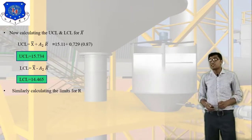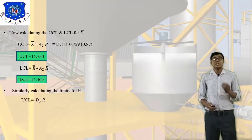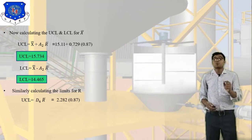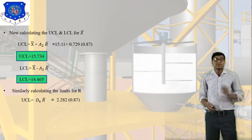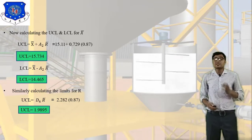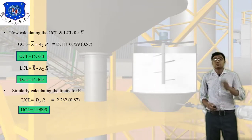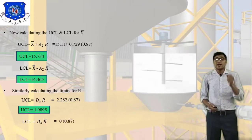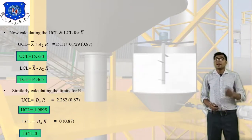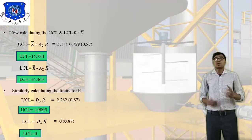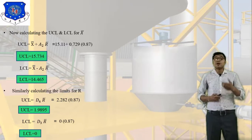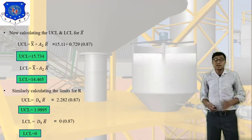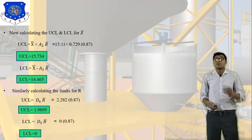Step 5: calculating UCL and LCL for the R chart. UCL = D4 × R-bar = 2.283 × 0.87 = 1.989. LCL = D3 × R-bar = 0 × 0.87 = 0. This completes steps 4 and 5, giving us all control limits for both the X-bar chart and the R chart.